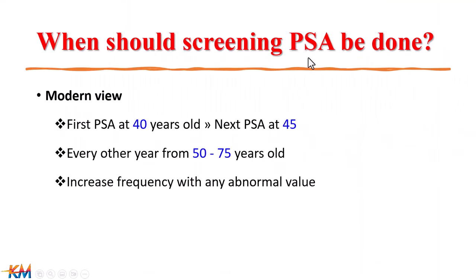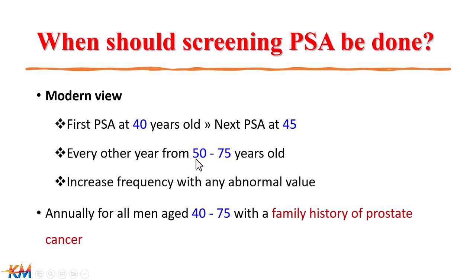When should screening PSA be done? The modern view requires the first measurement at 40 years of age. If it is normal, then we measure again at 45 years. From 50 years to 75 years old, PSA is measured every other year if the results remain normal after each measurement. But if there is a rise or abnormal value of PSA, the frequency of measurement must be increased — PSA is measured several times per year to track the level. Also, in patients with a family history of prostate cancer, PSA is measured annually to detect early changes in the prostate gland.